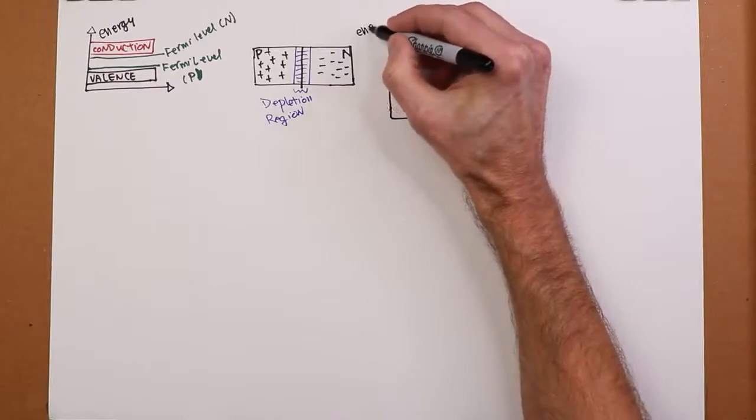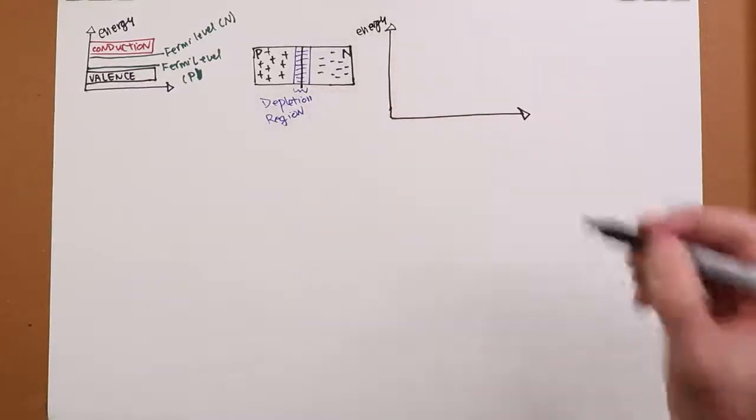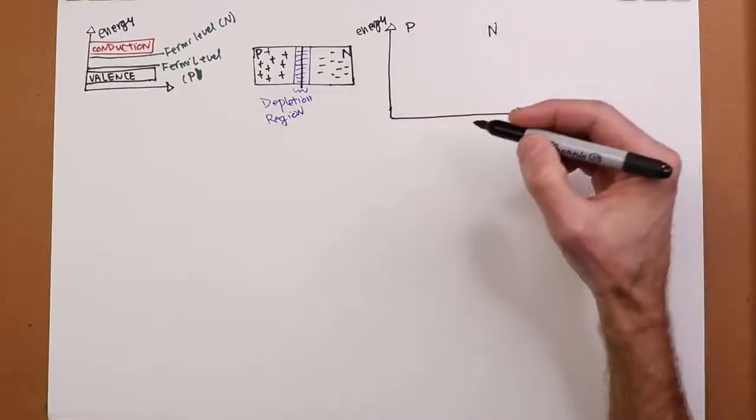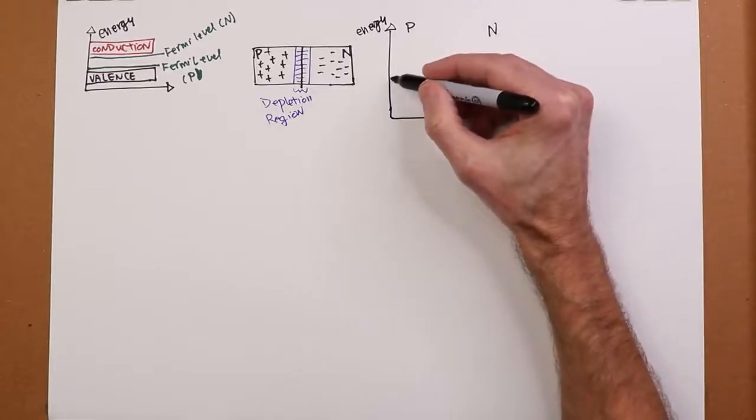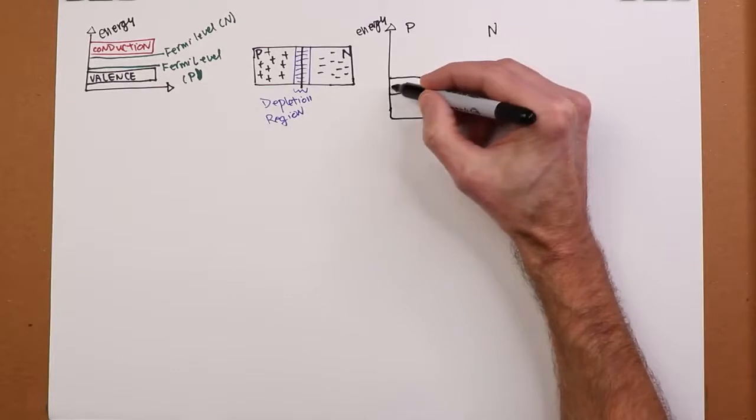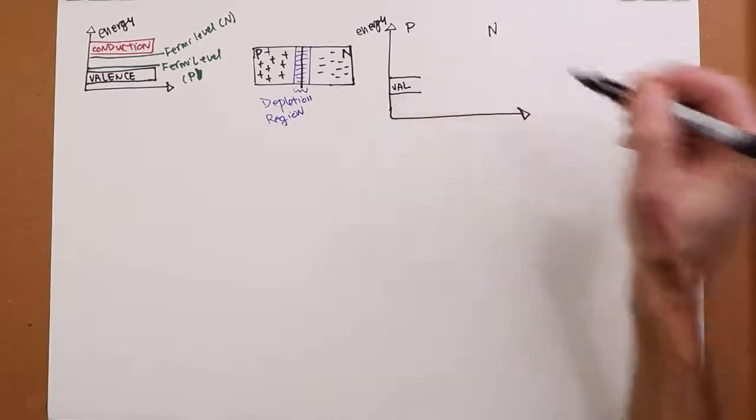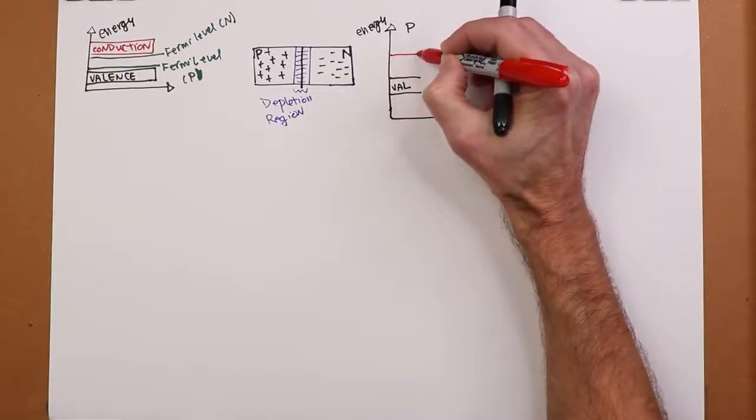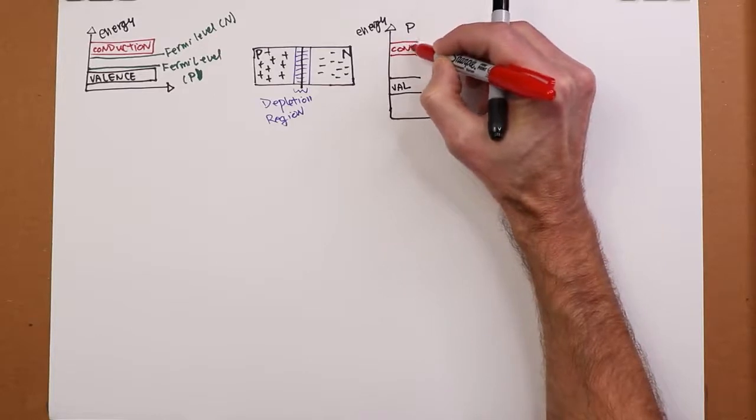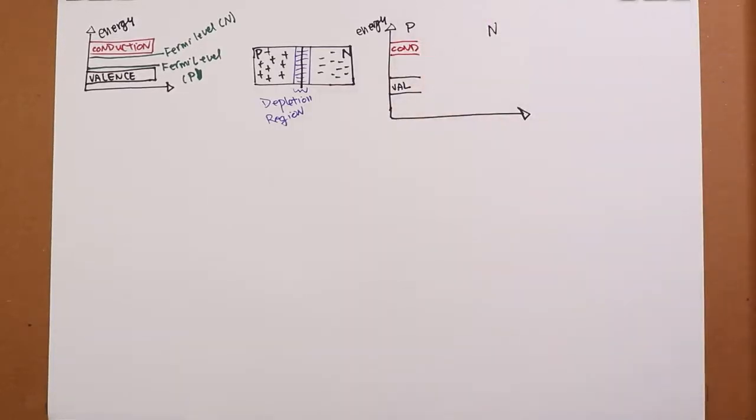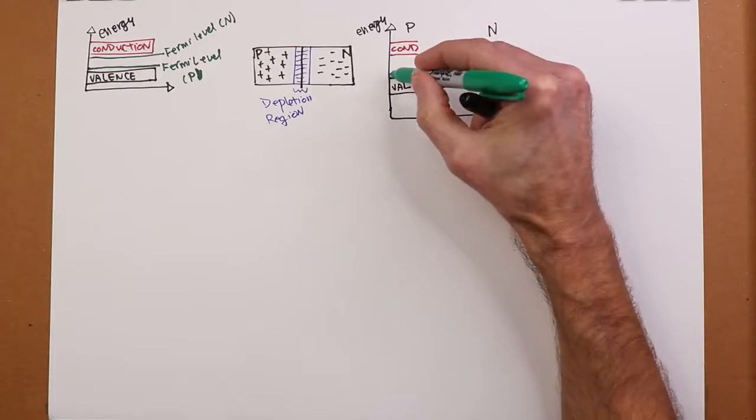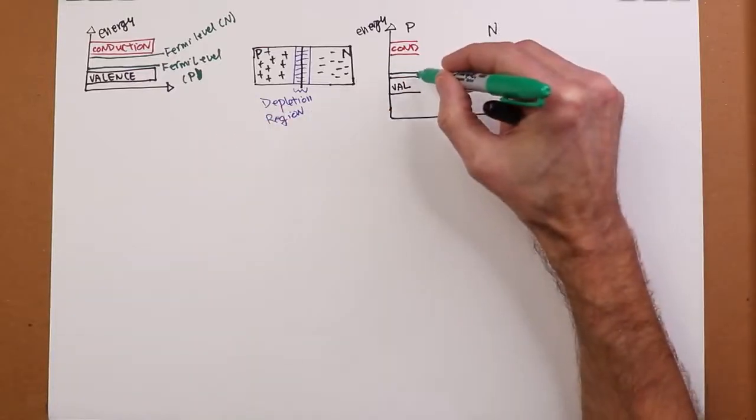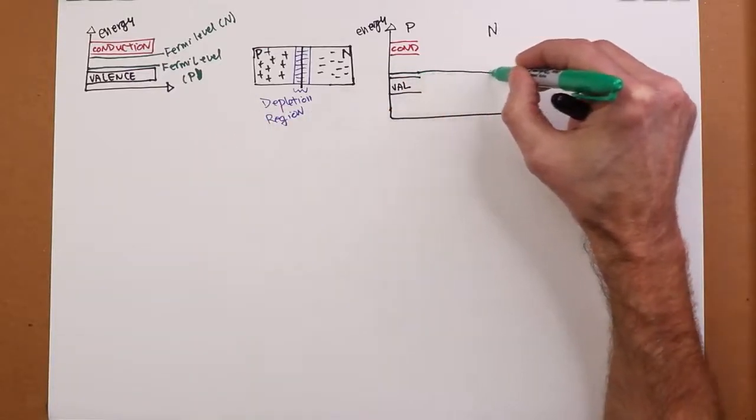So again, here's our energy level up here. In the case of P, so I'm going to draw the P over here and the N over here. In the case of P, we see the valence band is like this. And we see the conduction band is like this. And the Fermi level is over here. Now, this Fermi level, as I said, this is going to be consistent across the material. So I'm going to draw this straight across.